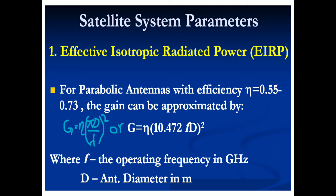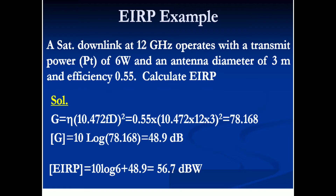The next parameter we may need to calculate is the gain of an antenna when given its dimensions. The gain is given by η(πD/λ)² or equivalently η(10.472·f·D)², where in the second expression f is in gigahertz and D is in meters, and in the first expression both D and λ are in meters. For an antenna, η typically varies from 0.55 to 0.73.